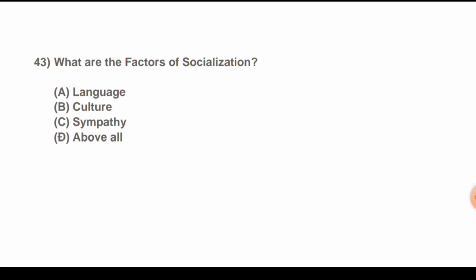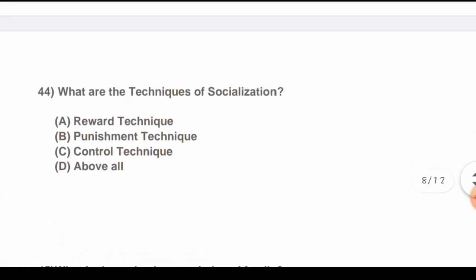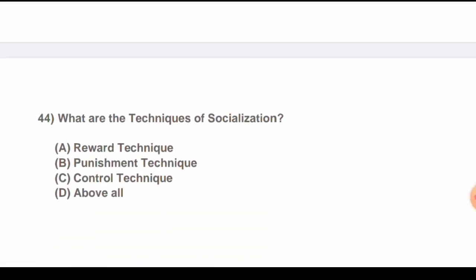Question 43: What are the factors of socialization? Options are: A) Language, B) Culture, C) Sympathy, D) All of the above. The correct answer is D) All of the above.